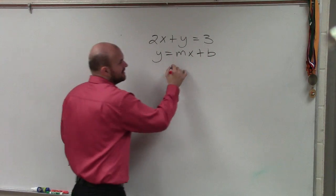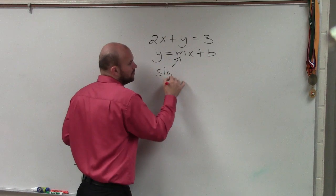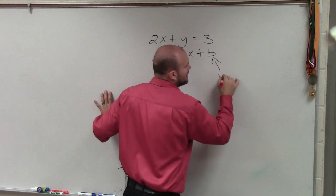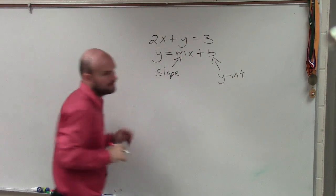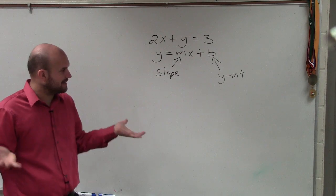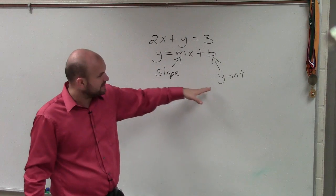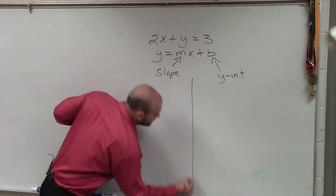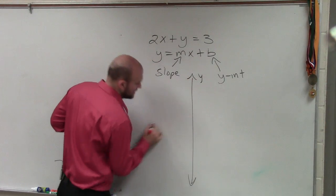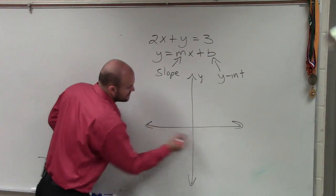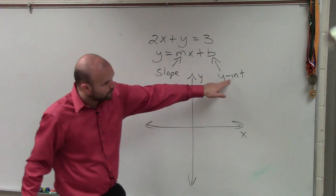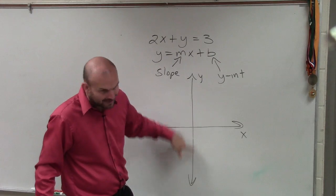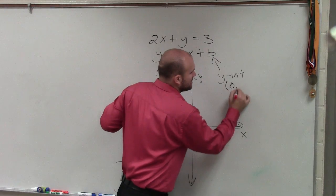And what's important about that is m represents the slope. b represents the y-intercept. What is the difference between the y-intercept and the slope? The y-intercept is the coordinate point where the graph crosses the y-axis. There's the y-axis. There's the x-axis. So the y-intercept is a point that's on the y-axis. So it's a coordinate point.